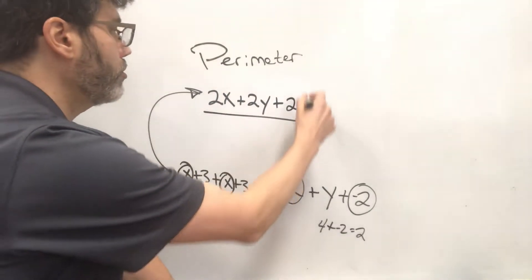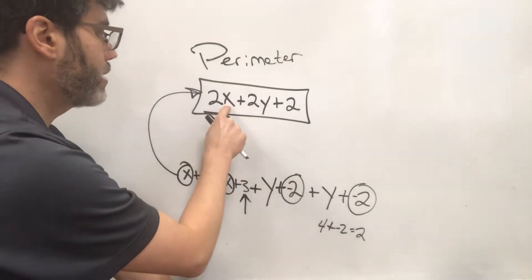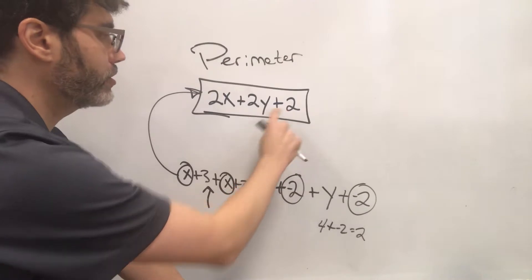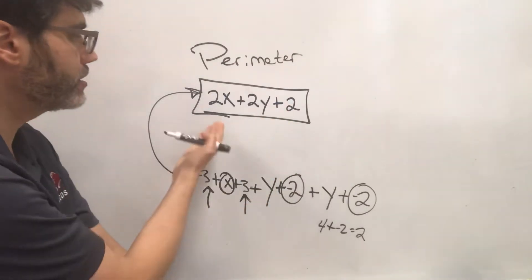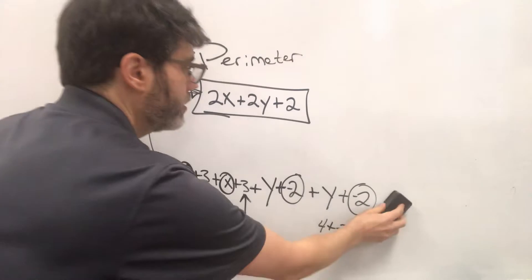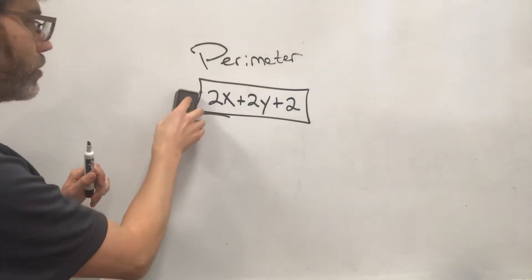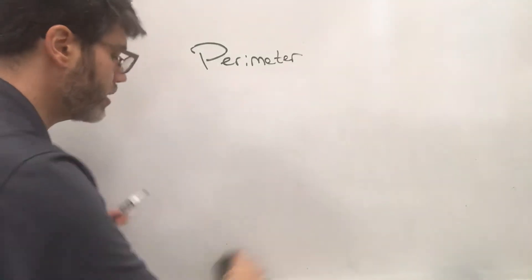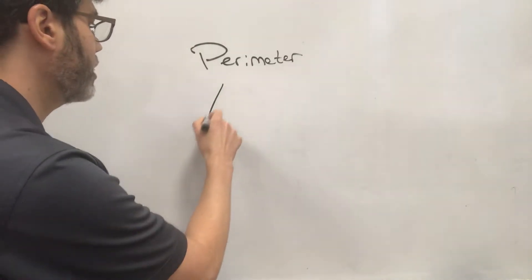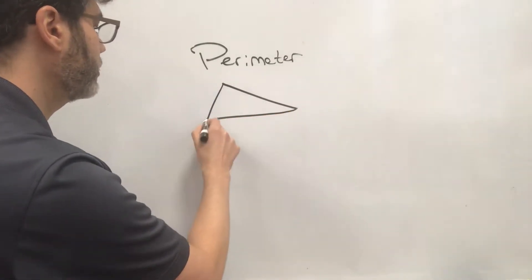Since all three terms right here, our x term, our y term, and our constant term, are unlike terms, this is as far as you can reduce your perimeter, and that is the answer to the perimeter question. Okay, so we could do that with other types of shapes like triangles. Let's say that we have a triangle here.